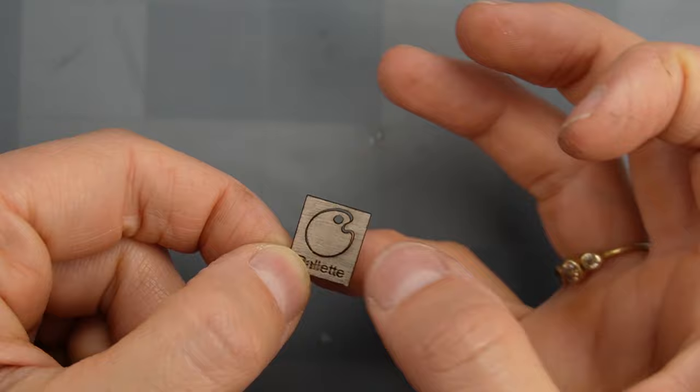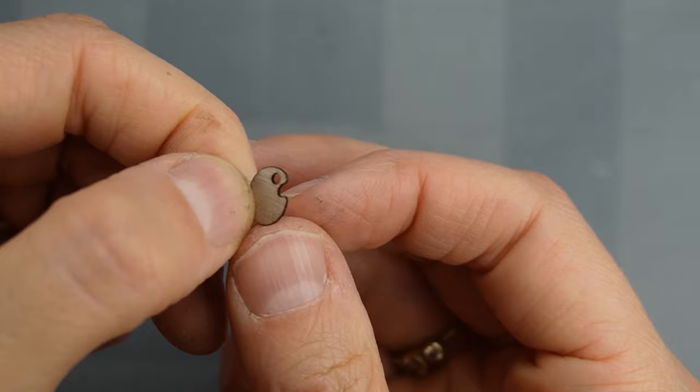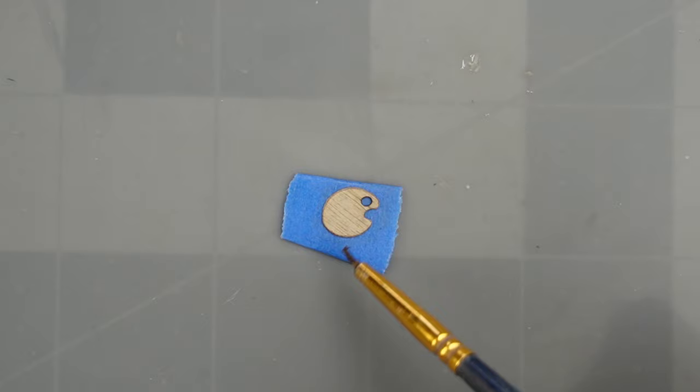The kit also comes with an artist palette which I'll paint at the same time as the easel. The laser cutter left some really sharp edges, so I'm rounding them with sandpaper to give it a more natural look.